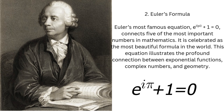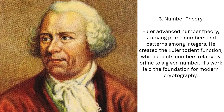Number Theory: Fascinated by primes and divisibility, Euler expanded on Fermat's ideas. His totient function became crucial for encryption algorithms used in internet security. Euler also explored partitions, sums of series, and properties of integers. These insights transformed number theory from a curiosity into a practical tool for mathematics and technology. RSA encryption relies directly on Euler's discoveries to secure digital communication. Euler showed that abstract number problems could have far-reaching real-world applications.